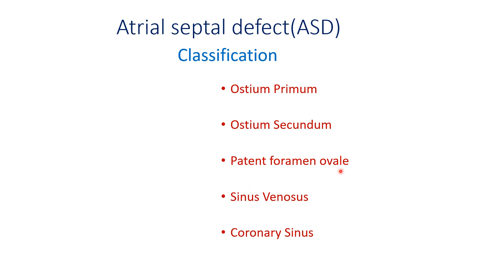Patent foramen ovale is rare and will be discussed later. Sinus venosus type is seen in 4% and is located in the upper part of the atrial septum. The coronary sinus type is also present and behaves like other atrial septal defects.